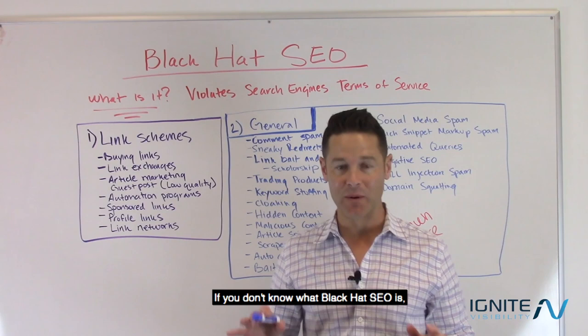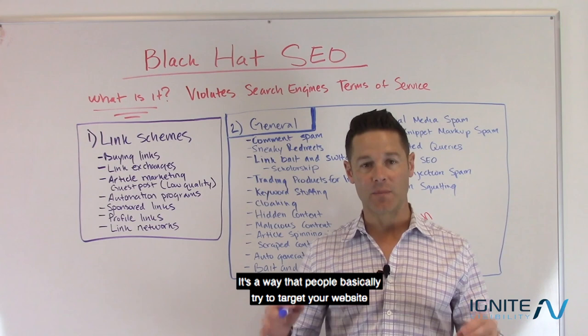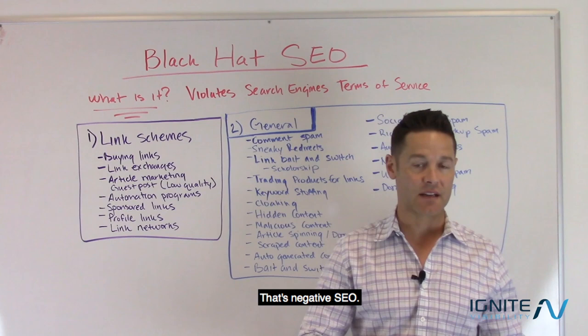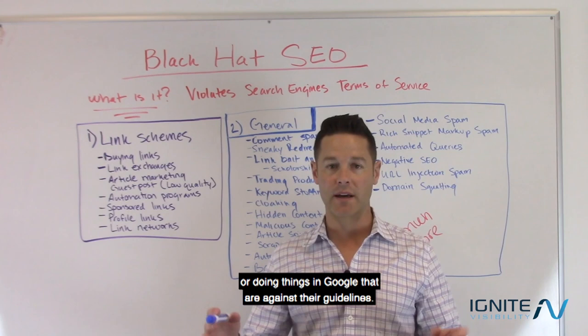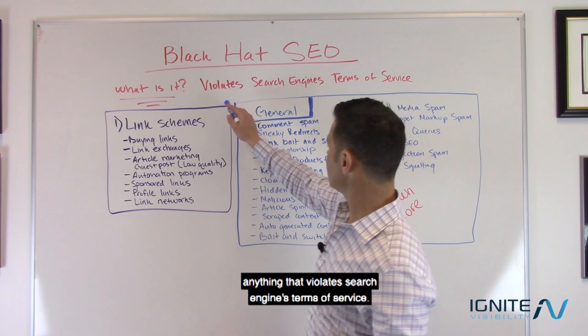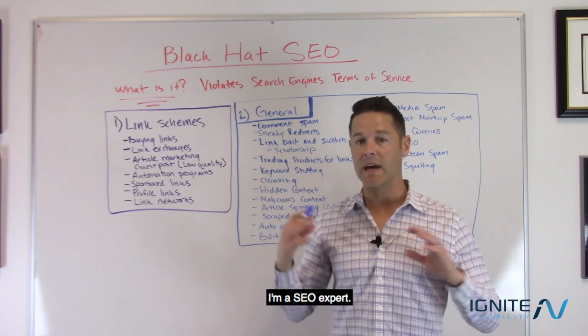Today I'm going to talk to you about Black Hat SEO. If you don't know what Black Hat SEO is, it's still a thing — it's still out there. It's a way that people basically try to target your website and take it down. That's negative SEO, and that's a type of Black Hat SEO. It's also the concept of doing things in Google that are against their guidelines. Black Hat SEO is anything that violates a search engine's terms of service.